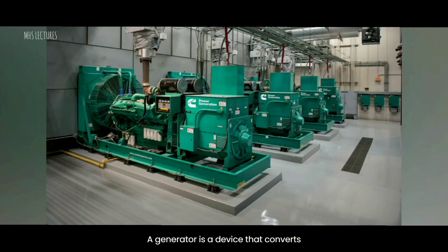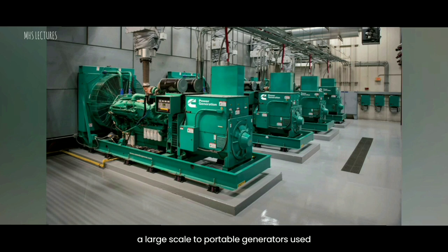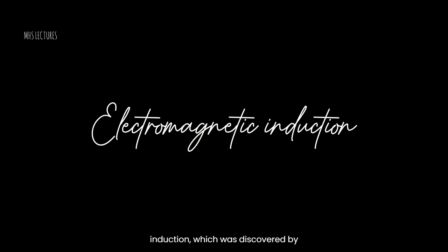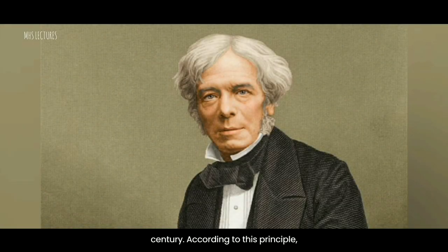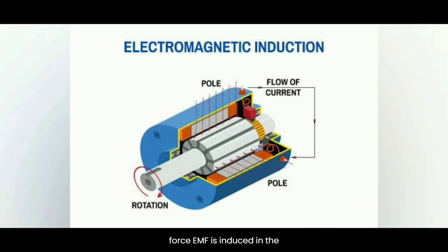A generator is a device that converts mechanical energy into electrical energy, also known as an electric generator or dynamo. Generators are used in various applications, ranging from power plants that generate electricity on a large scale to portable generators used for backup power supply. Generators work based on the principle of electromagnetic induction, discovered by Michael Faraday in the early 19th century. When a conductor moves through a magnetic field, or when a magnetic field changes around a stationary conductor, an electromotive force (EMF) is induced in the conductor. This induced EMF causes current to flow if the circuit is closed, thus generating electrical energy.